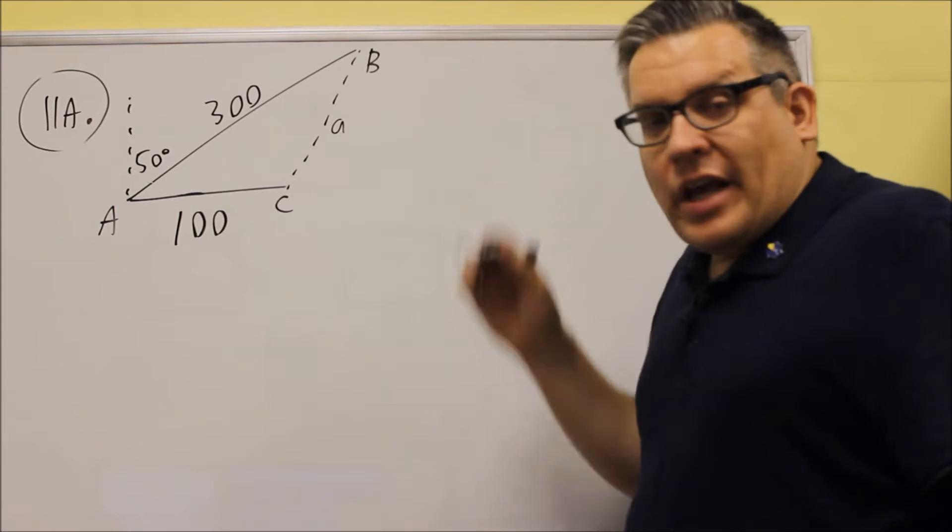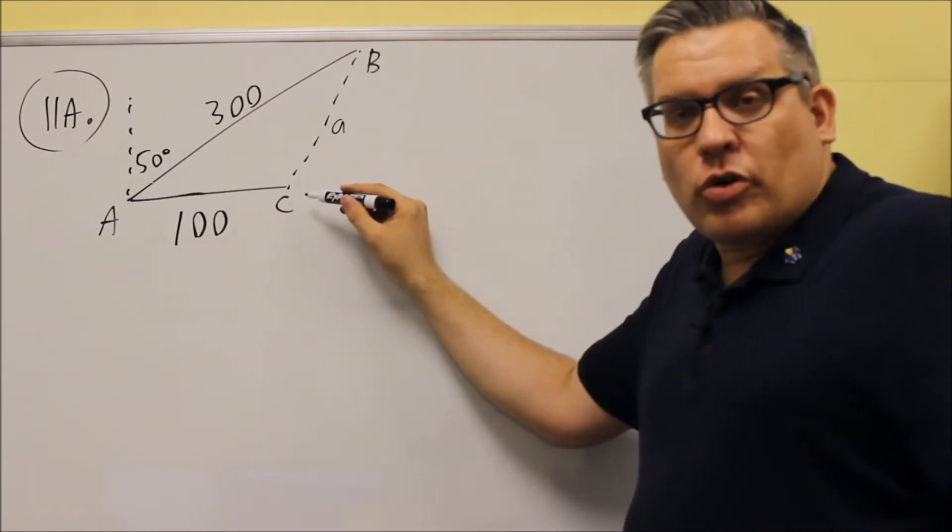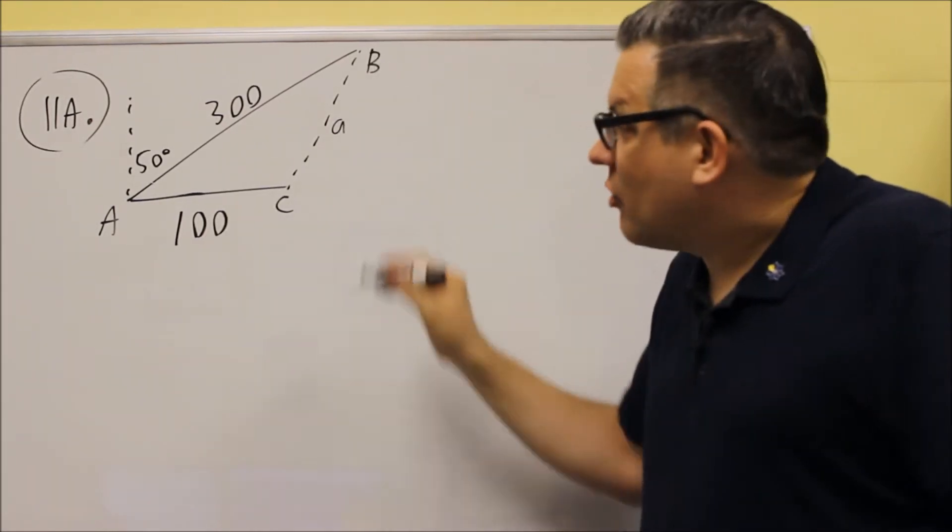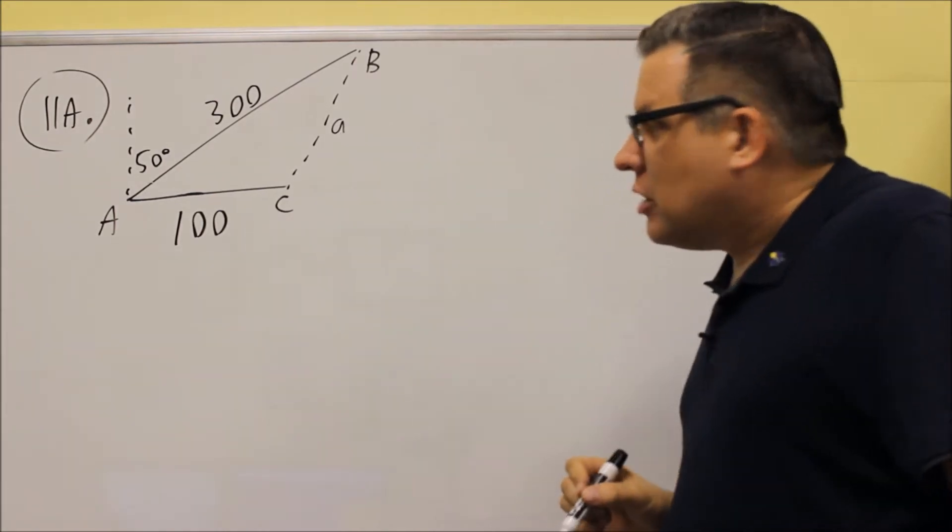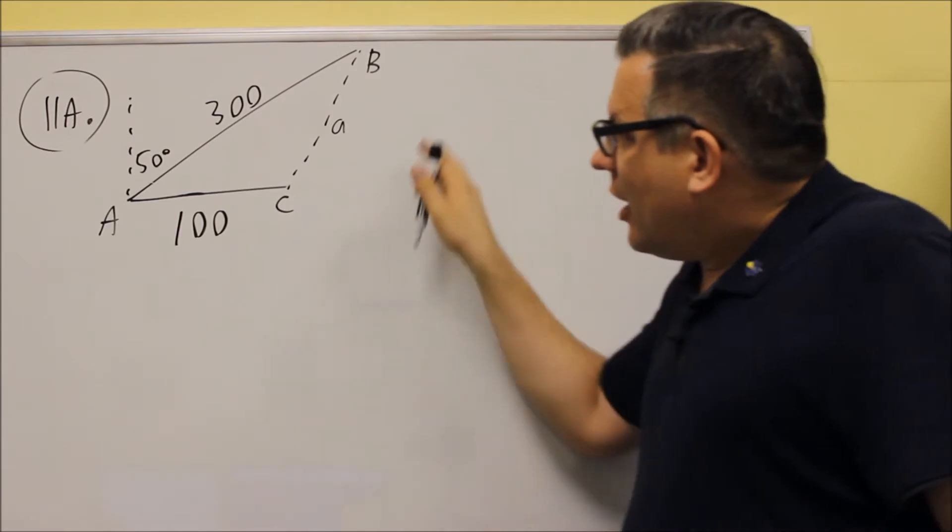So the question asks, at that point when he realizes the mistake, how far is he from the destination point? So it's asking for this side here, which would be lowercase a based on this.